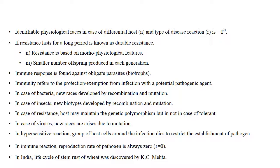Insect resistance is based on morphophysiological features and a smaller number of offspring produced in each generation. Immune response is found against obligate parasites or biotrophs. Immunity refers to the protection or exemption from infection with a potential pathogenic agent.